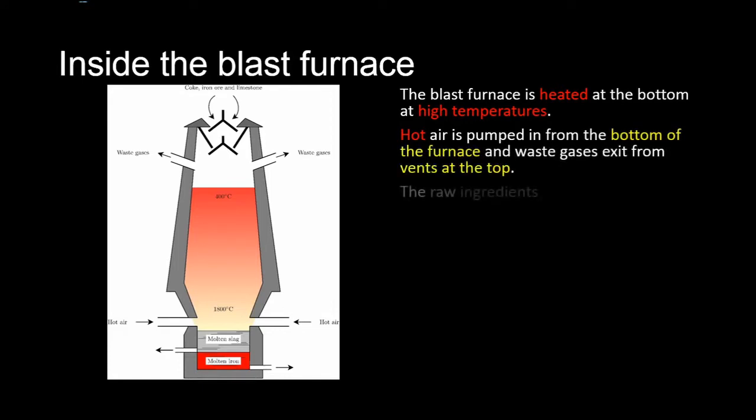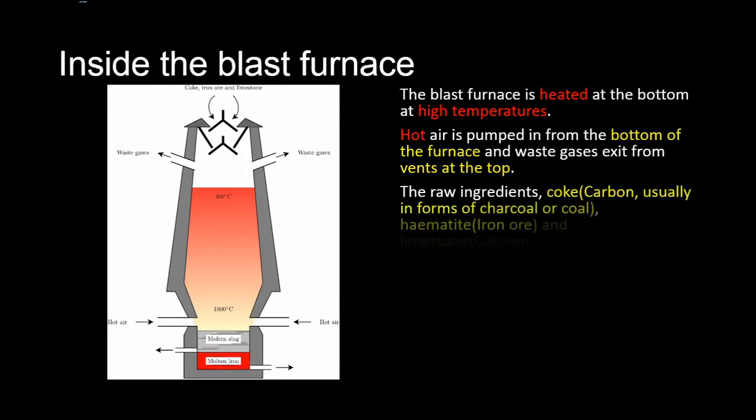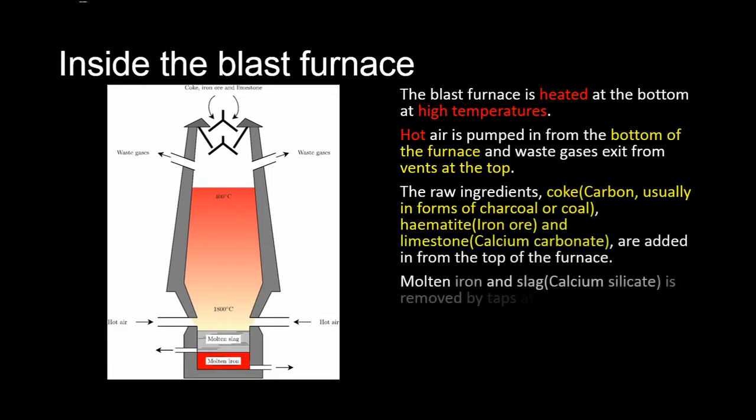The raw ingredients: cold carbon, usually in the forms of charcoal or coal, hematite iron ore, and limestone (calcium carbonate) are added from the top of the furnace. Molten iron and slag (calcium silicate) are removed by taps at the bottom of the furnace.